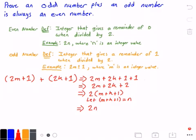2 times n is an even number, where n is some arbitrary integer value.